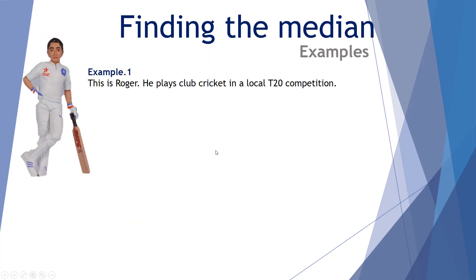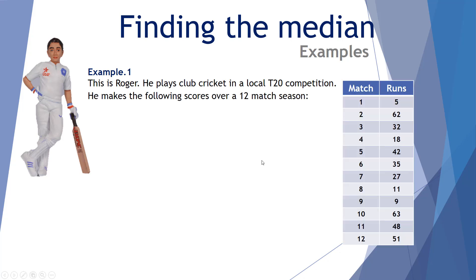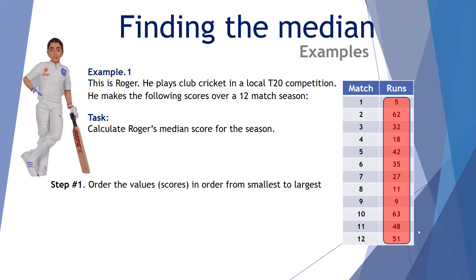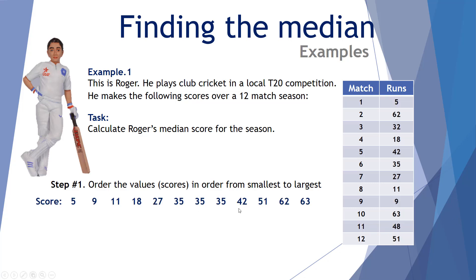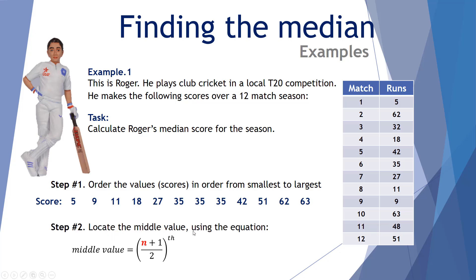This is Roger. He plays club cricket at a local T20 competition and here are his scores for his 12-match season. We want to calculate Roger's median score for the season. Step one: order the values — that is the scores — from smallest to largest. So those scores are rewritten from smallest to largest. Step two: find the middle value using the equation.